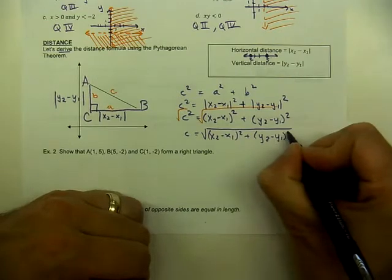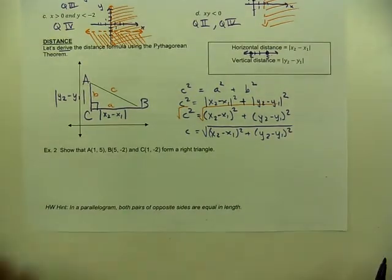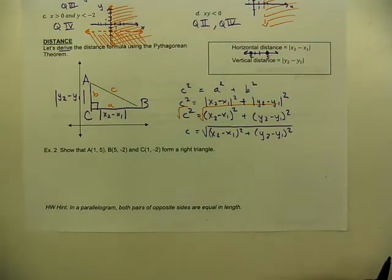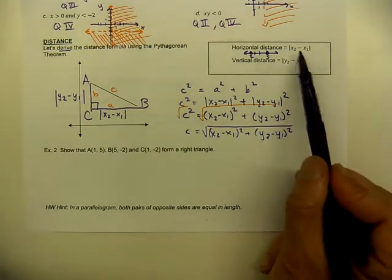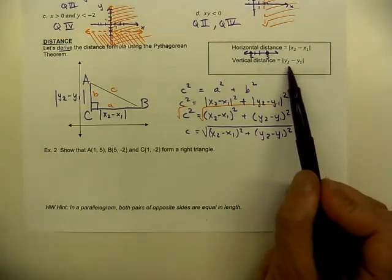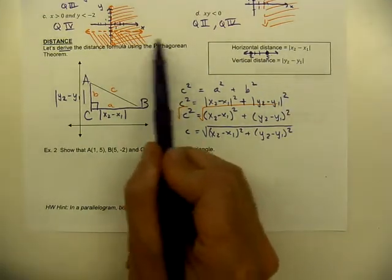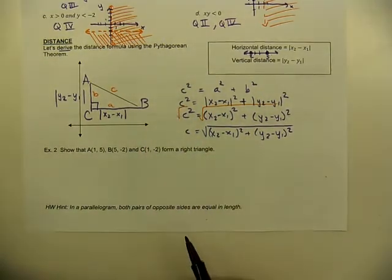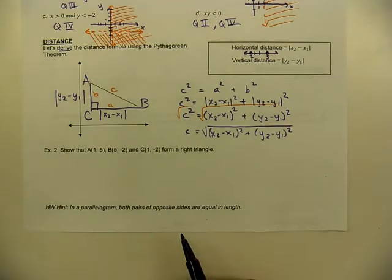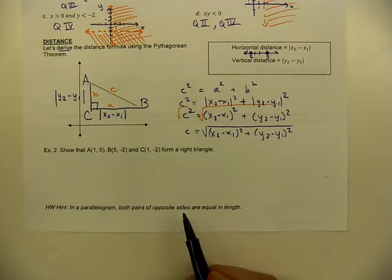That's the derivation — explaining where the distance formula comes from using horizontal length, vertical length, and the Pythagorean theorem as basic components. Now let's do an example using the distance formula.